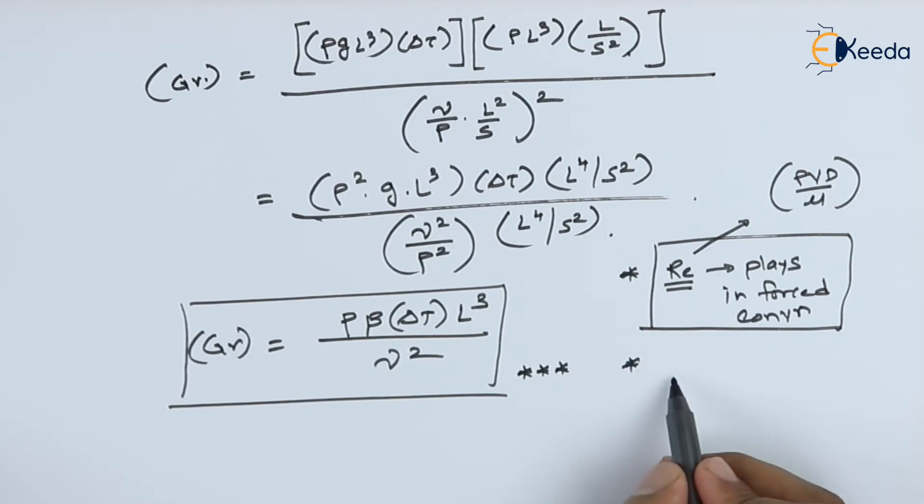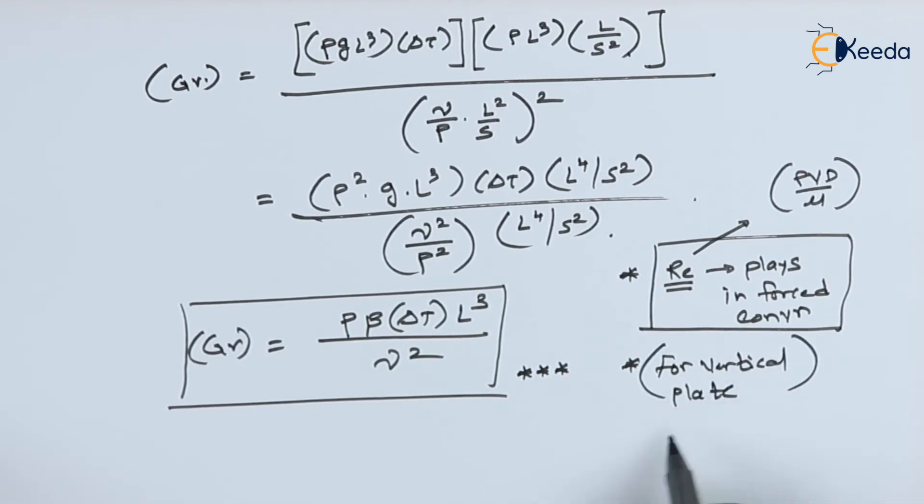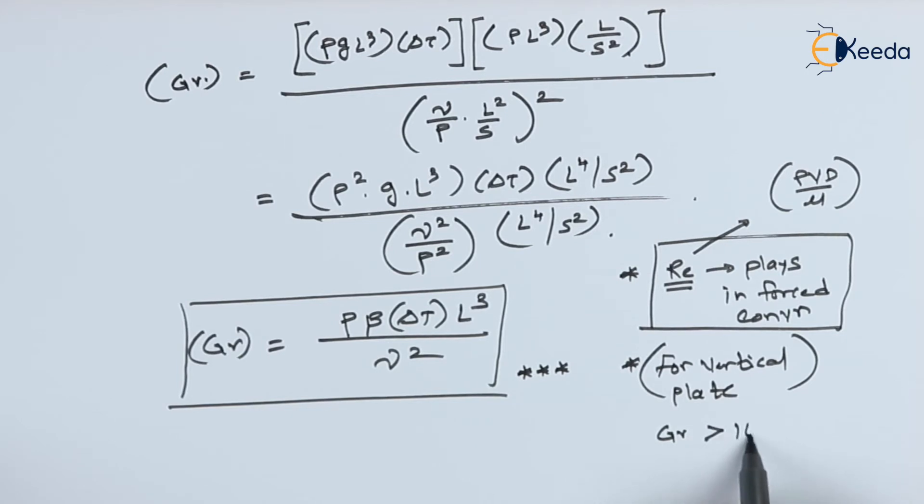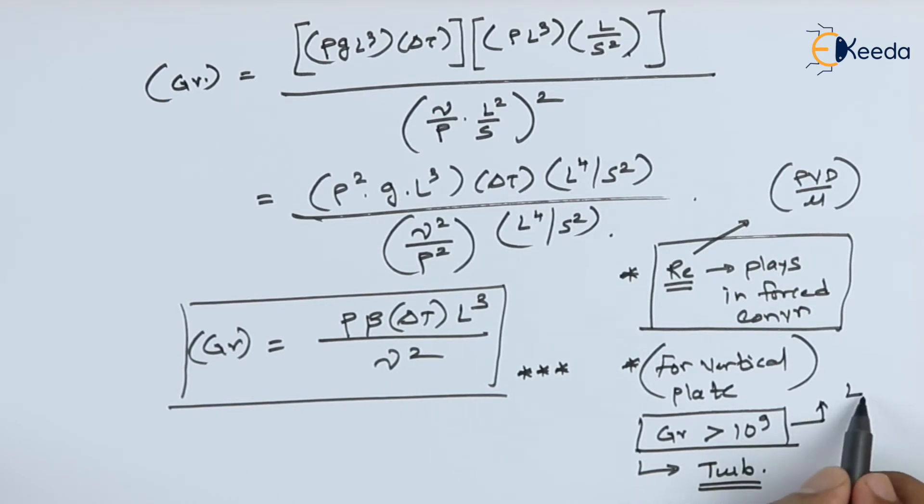Then, the second thing is for vertical plate. If the Grashof number is more than 10 raised to 9, then the flow can be termed as turbulent or else that will be a laminar flow. So, based on this number, now, again, this is the empirical relationship. This thing they have found by conducting many experiments. But, we can conclude that for natural convection, if the Grashof number is more than 10 raised to 9, then the fluid flow around the body must be the turbulent or else it has to be the laminar flow.